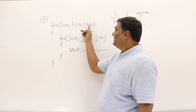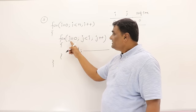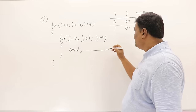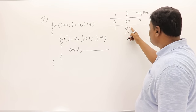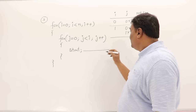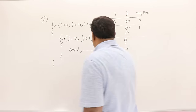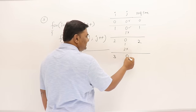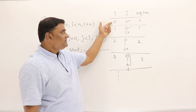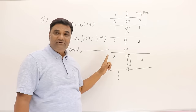Then i increments to 1. j runs from 0: 0 is less than 1, so it executes once; j becomes 1, which is not less than 1, so it stops — 1 execution. When i is 2, j runs for 0 and 1, stopping at 2 — 2 executions. When i is 3, j runs for 0, 1, 2 — 3 executions. So when i was 0: 0 times; i=1: 1 time; i=2: 2 times; i=3: 3 times, and so on.